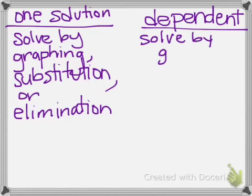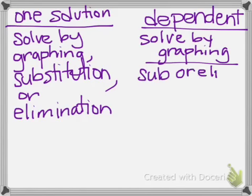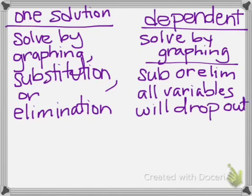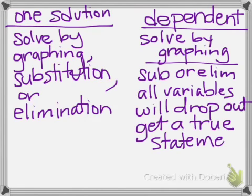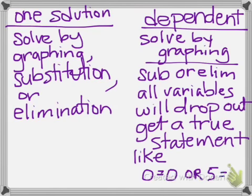If you have something that's dependent, you can solve it by graphing, you can look at the graph and see that it's overlapping. If you solve by substitution or elimination, all your variables will drop out and you'll get a true statement. The statement will look something like zero equals zero, or five equals five. It will always be true, but it will be a confusing answer.